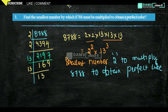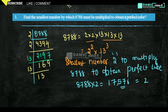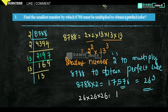If you multiply 8788 by 2, then you get 17,576. That will be 26³. So that is the answer. If you take 26 × 26 × 26, then you will get 17,576.